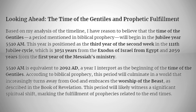Based on my analysis of the timeline, I have reason to believe that the time of the Gentiles — a period mentioned in biblical prophecy — will begin in the jubilee year 5510 AM. This year is positioned as the third year of the second week in the 111th jubilee cycle, which is 3,051 years from the exodus of Israel from Egypt and 2,059 years from the first year of the Messiah's ministry. 5510 AM is equivalent to 2092 AD, a year I interpret as the beginning of the time of the Gentiles according to biblical prophecy. This period will culminate in a world that increasingly turns away from God and embraces the worship of the beast as described in the book of Revelation.